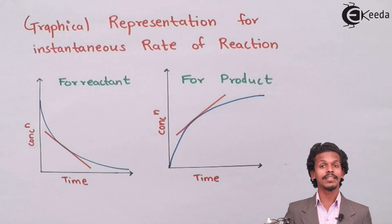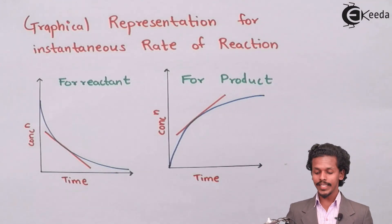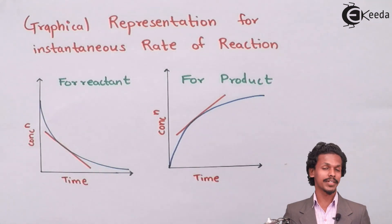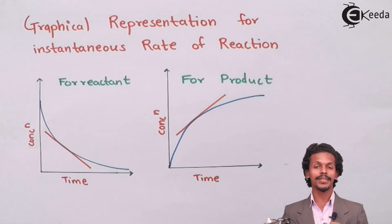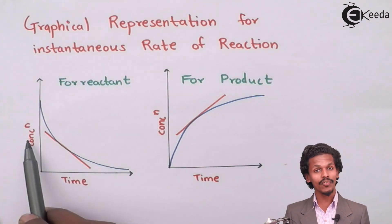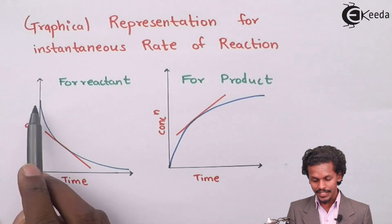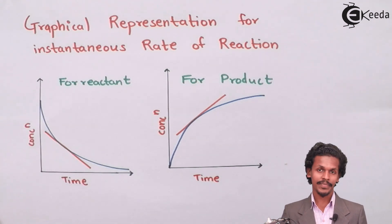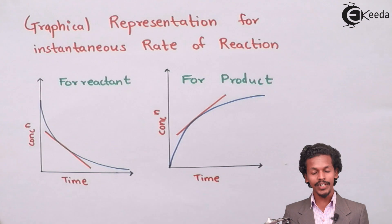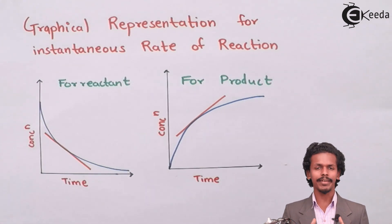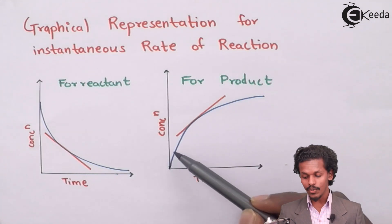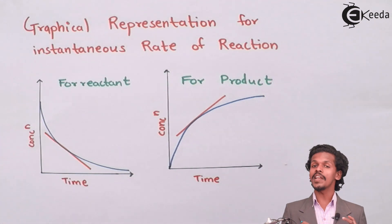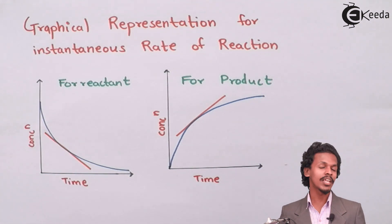As you can see on the screen, there are two graphs — one for the reactant and one for the product. As time moves forward, the concentration of the reactant goes on decreasing. For the product, as time increases, the concentration of the product goes on increasing. Since we are talking about instantaneous rate of reaction, we want to know the concentration at a particular time.